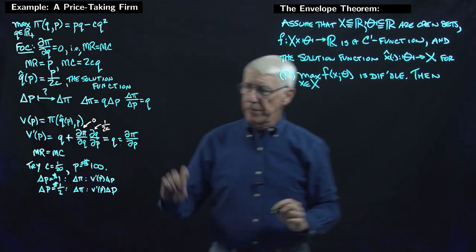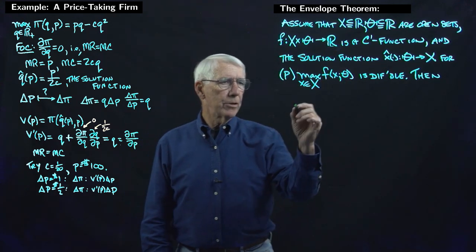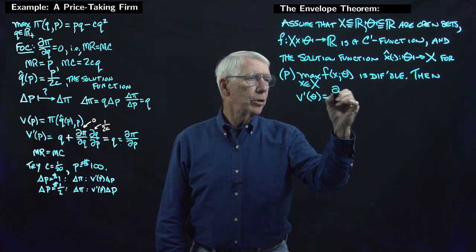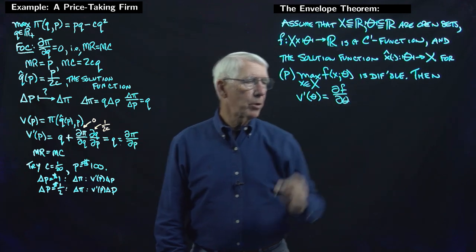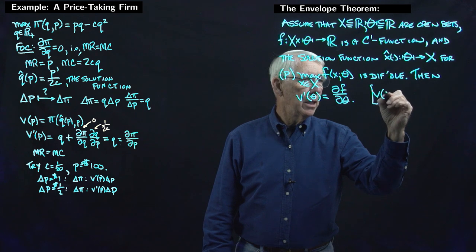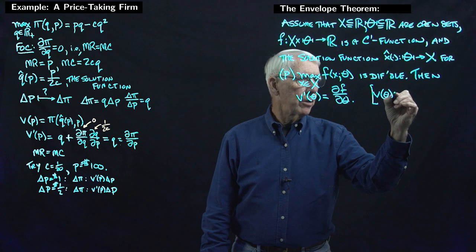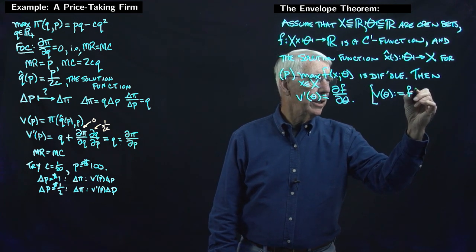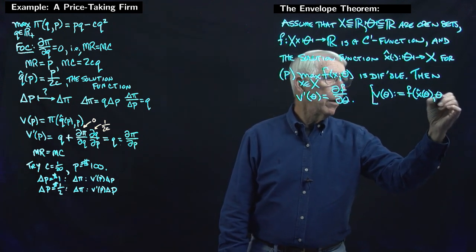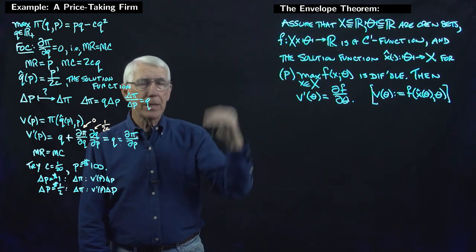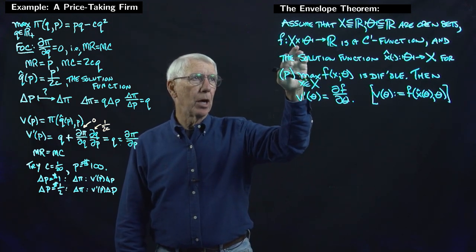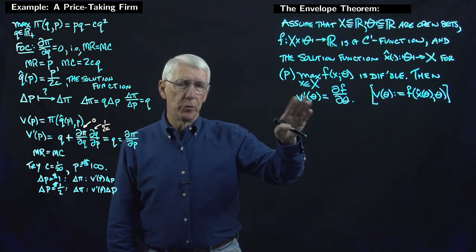The conclusion, not surprisingly given our example, is that the derivative of the value function is just the partial derivative of the objective function with respect to the parameter. The value function is defined as the objective function evaluated at the solution function's value and the parameter. That's the envelope theorem — a simple conclusion about the derivative of the value function.